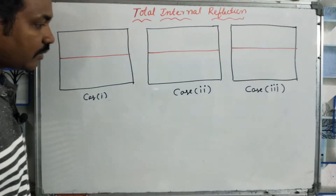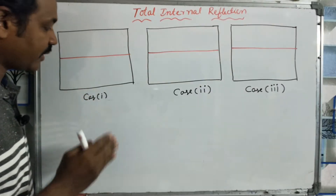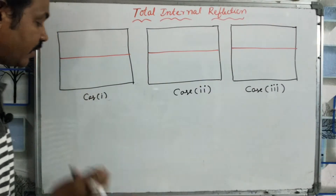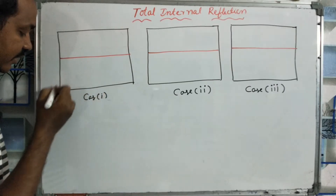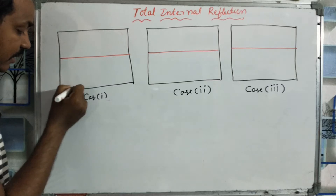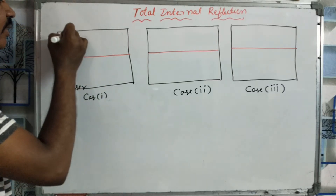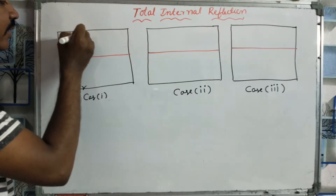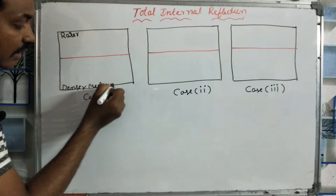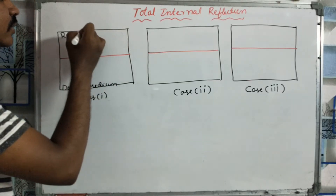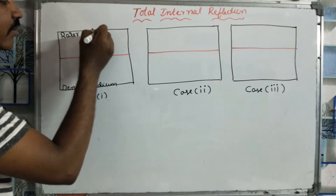This is the critical angle and the total internal reflection involves two mediums. The two mediums are the denser medium and the rarer medium. Water is a rarer medium. Light travels with a critical angle from a denser medium to a rarer medium.